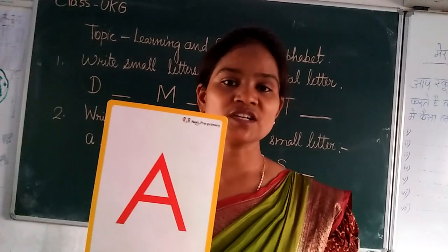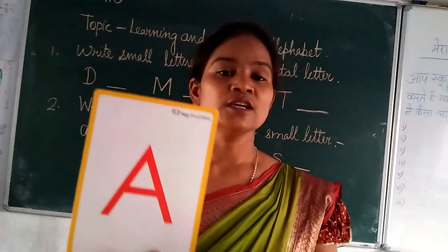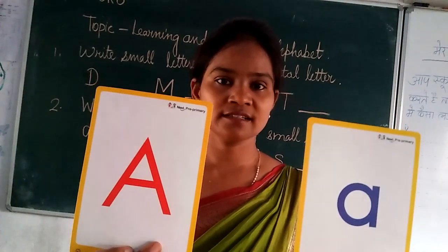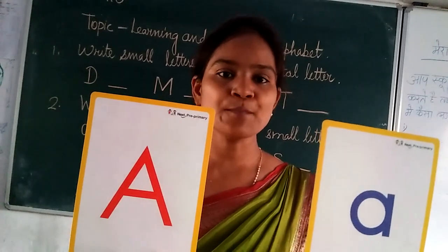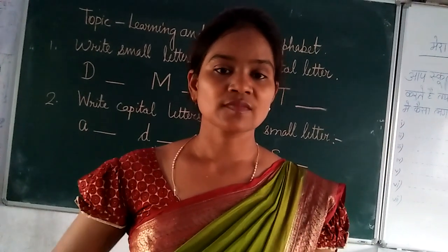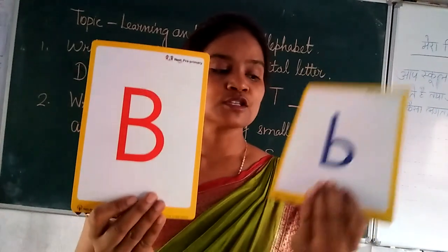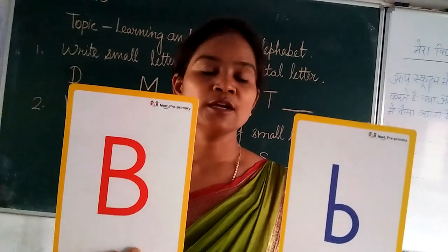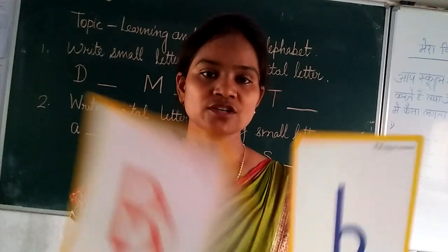Capital A. Small A. A for apple. Capital B. Small B. B for bat.